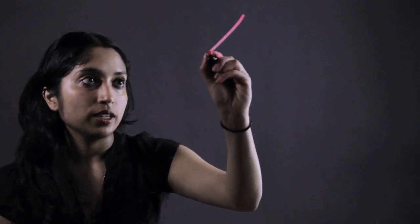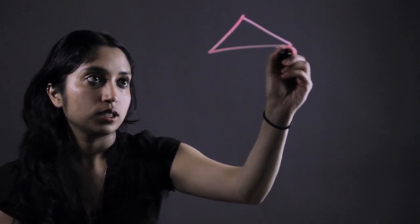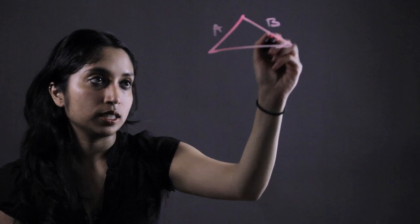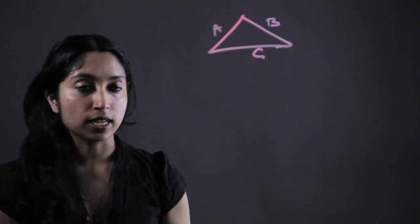Say we have some triangle here with sides A, B, and C. We can find the circumcenter in five easy steps.